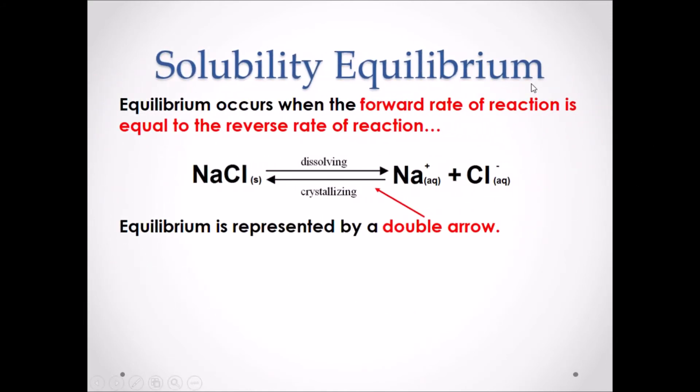Solubility equilibrium. Equilibrium occurs when the forward rate of reaction is equal to the reverse rate of reaction. If we look at our example chemical equation, we can see a double arrow. This represents an equilibrium.